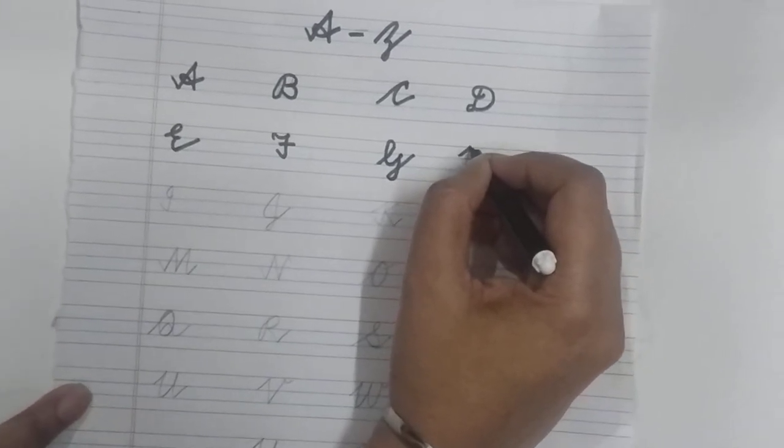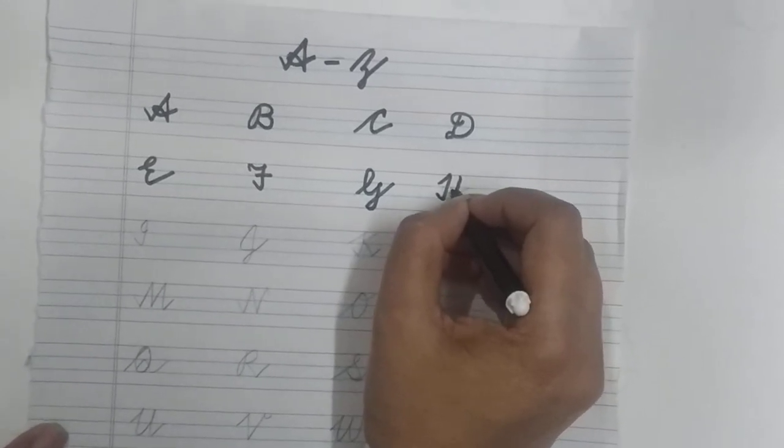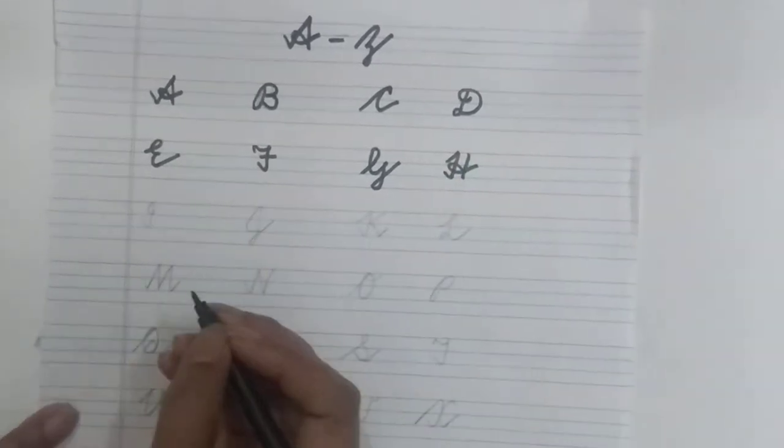Slanting line, standing line, then slant, again standing line, make a loop, slant. H.